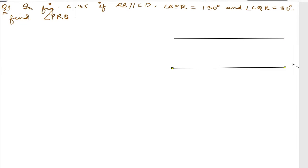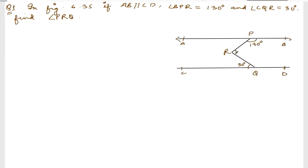Now we are doing Exercise 6.3, Question number 1. The question says: in figure 6.35, if AB is parallel to CD, angle BPR is 130°, and angle CQR is 30°, we need to find angle PRQ.